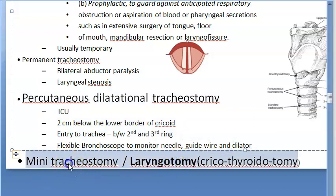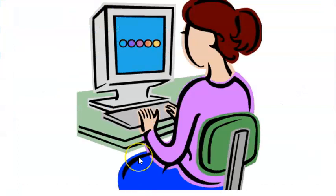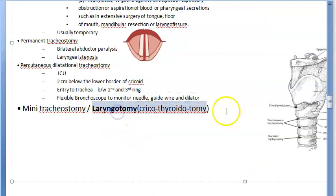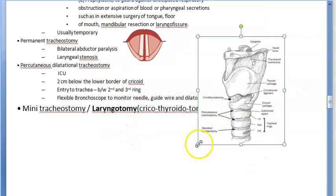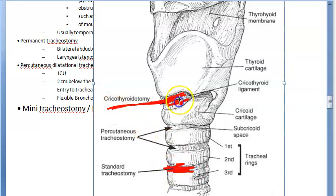Lastly, we have mini-tracheostomy, also called laryngotomy or cricothyroidotomy. The incision is made between the thyroid cartilage and the cricoid cartilage — much higher than standard tracheostomy. You can see in the diagram that cricothyroidotomy is higher, while standard tracheostomy is between the second and third tracheal ring. That is why it is called cricothyroidotomy, laryngotomy, or mini-tracheostomy.